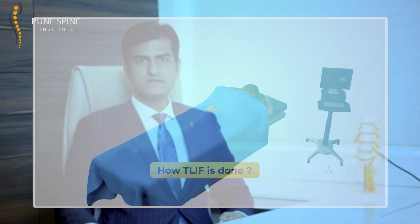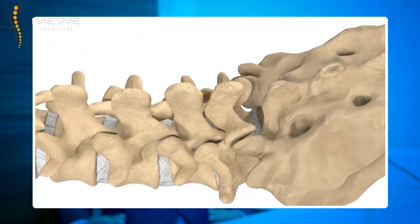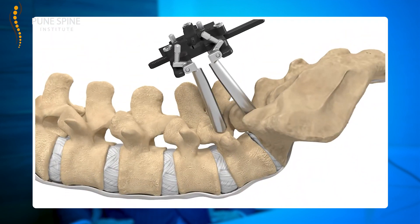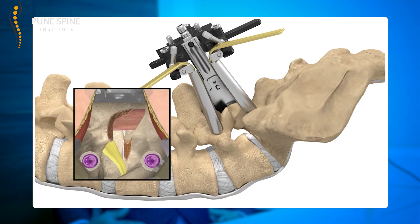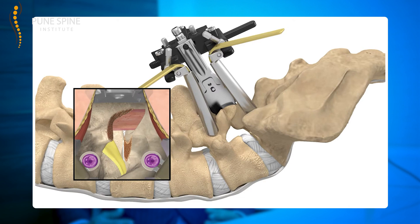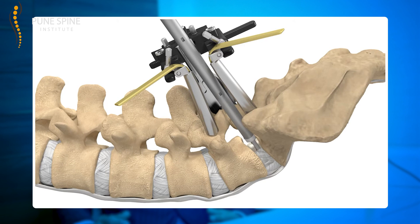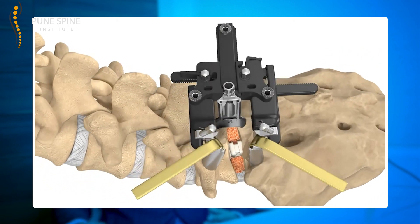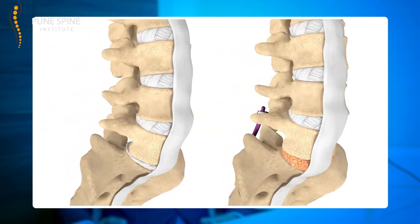The T-LIF procedure is done under general anesthesia in which the patient is put in the prone position. After sterile skin preparation, the surgeon reaches the spine through special retractors called tubes. This surgery is done under microscope assistance to give better visualization. Once you reach the spine, the facet joints which connect the two vertebrae are cut. The nerves are decompressed and the disc space is reached. The surgeon then clears out the disc space, prepares the end plate, and puts in autologous bone graft. A cage is also inserted inside to maintain the disc space between the two vertebrae. The surgeon then puts in percutaneous pedicle screws to stabilize everything, and rods are connected to give it a solid construct.